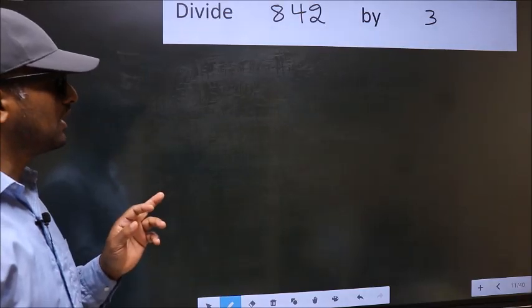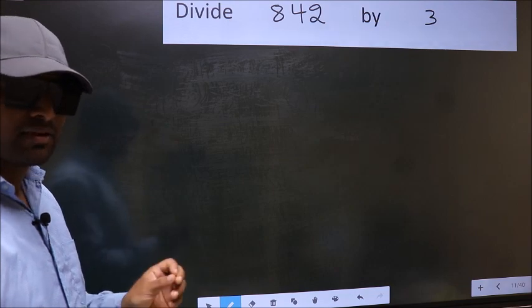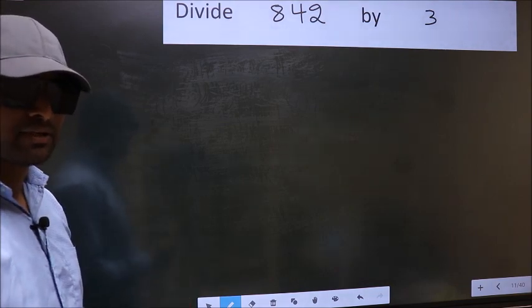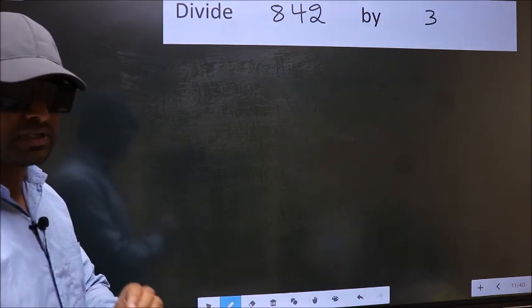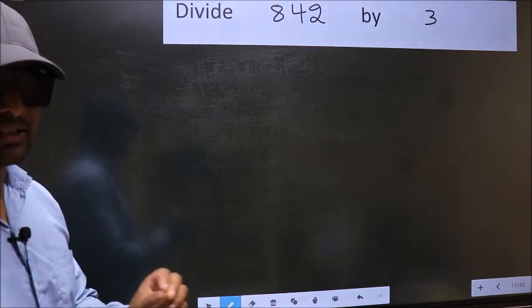Divide 842 by 3. While doing this division, many do this mistake. What is the mistake that they do? I will let you know. But before that, we should frame it in this way.